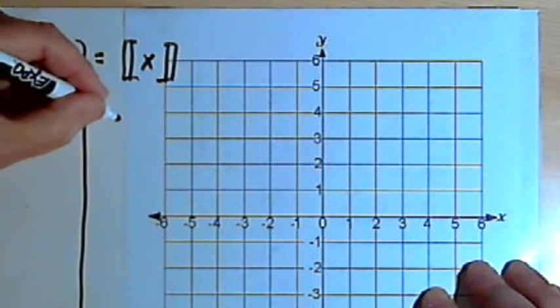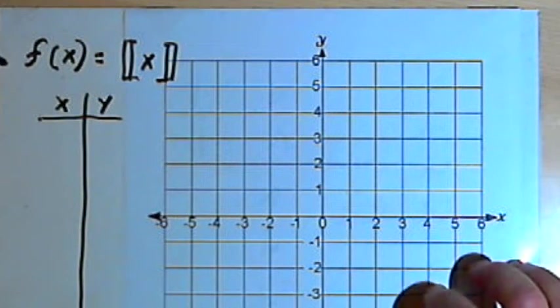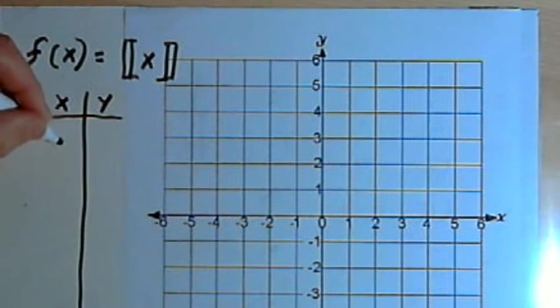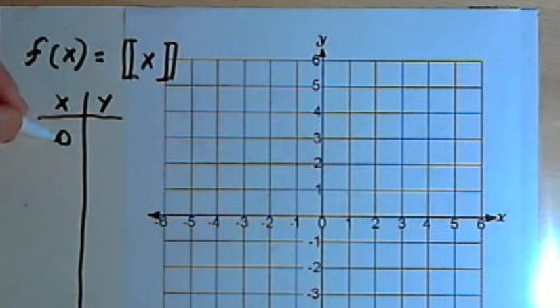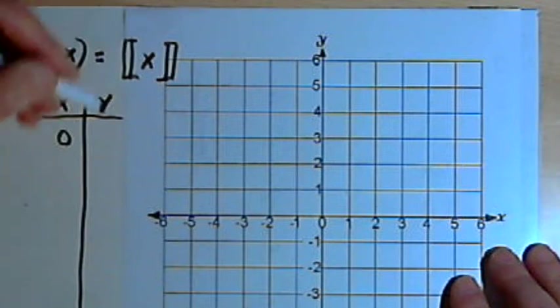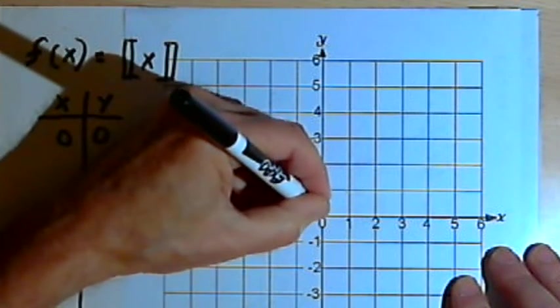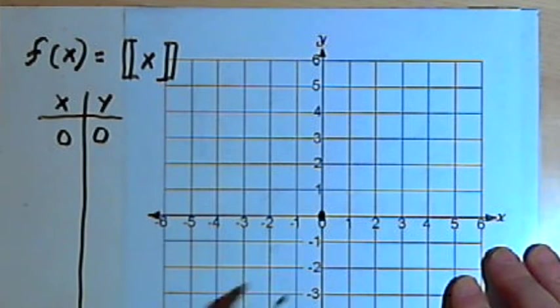I'm going to make a table of values for my x and my y values. And let's just start with x equaling 0. So when x is 0, then the greatest integer value of 0 is going to be 0. So my y will also be 0. That means I'm going to have a dot here at the origin.